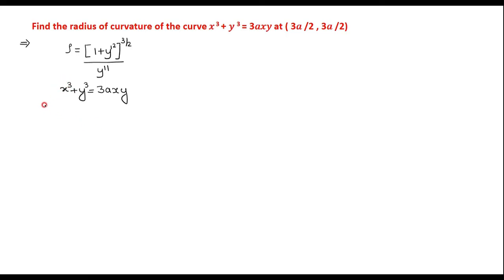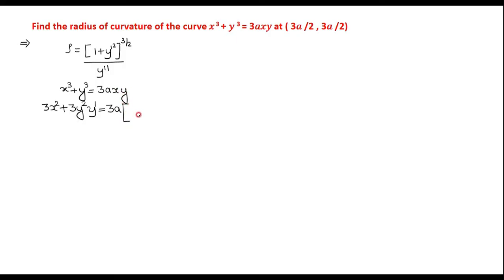The derivative of x³ is 3x². The derivative of y³ is 3y² · dy/dx, that is y'. On the right hand side, as this is an implicit function, we have to apply the product rule.